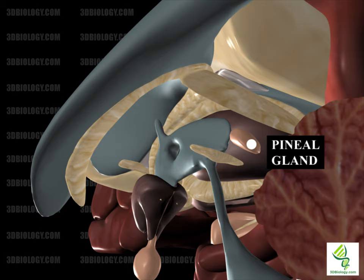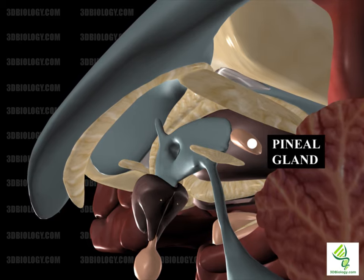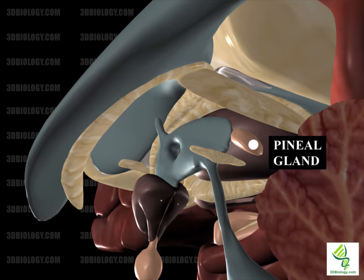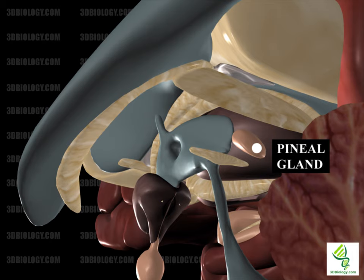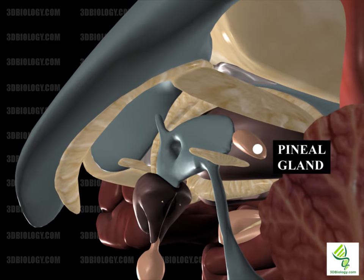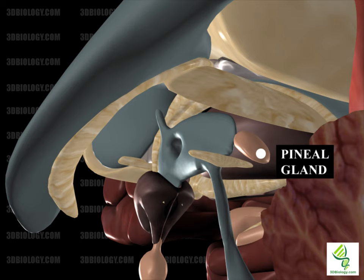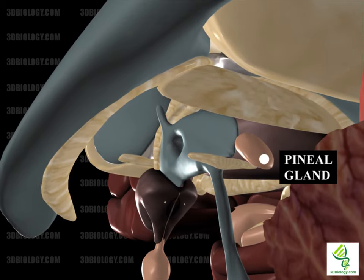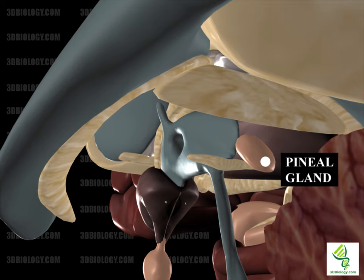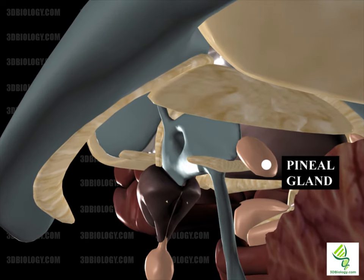The pineal is a small endocrine gland which is not paired. The name comes from the shape of the gland, which looks like a small pine cone. It produces melatonin, a serotonin-derived hormone which modulates sleep cycles. The pineal can be found where two halves of the thalamus meet, behind the third ventricle, and is part of the epithalamus.